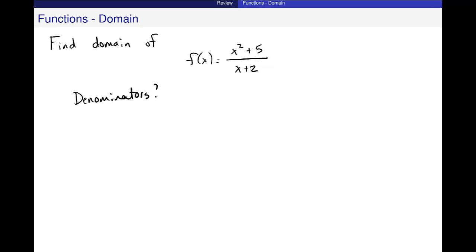And the answer to that question is yes. There are some denominators. In fact, I have this x plus 2 in the denominator of this function. I don't want that to be equal to 0, so I'm going to find the places where it is equal to 0. And that is x is equal to negative 2.